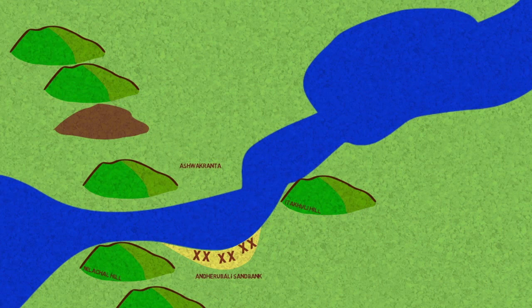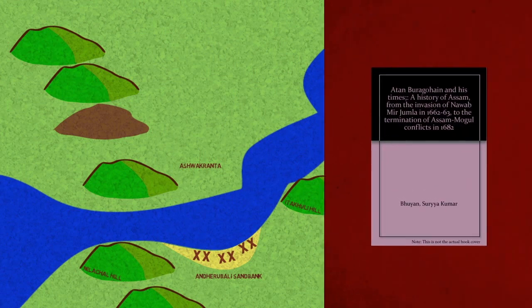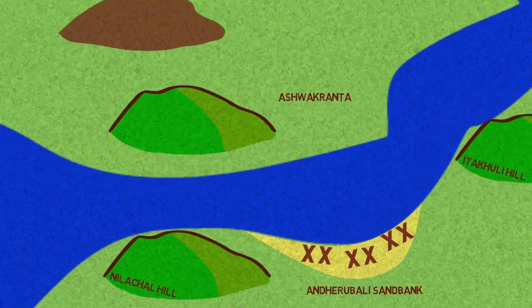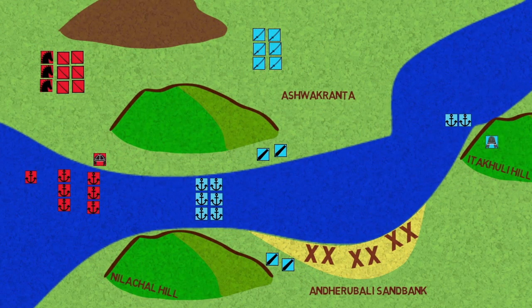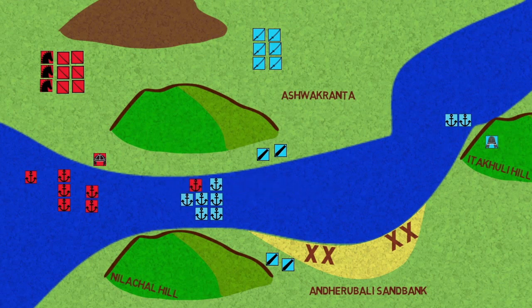This area is Ashwaklanta, and this part is the Andherubali Sandbank. Andherubali being sandy is suitable for landing cavalry onto the shore of the river, and so it was guarded by defences. Around March of 1671, the Mughals came to know that Lachit Borphukan was seriously ill and that the morale of the Ahom forces was quite low. The Mughal ambassador Pandit Rai visited the Ahom camp and on returning reported a breach in the defences of the Andherubali Sandbank. Ram Singh received fresh reinforcements — additional war sloops commanded by Mughal Admiral Munawar Khan — and decided to make best use of this opportunity.